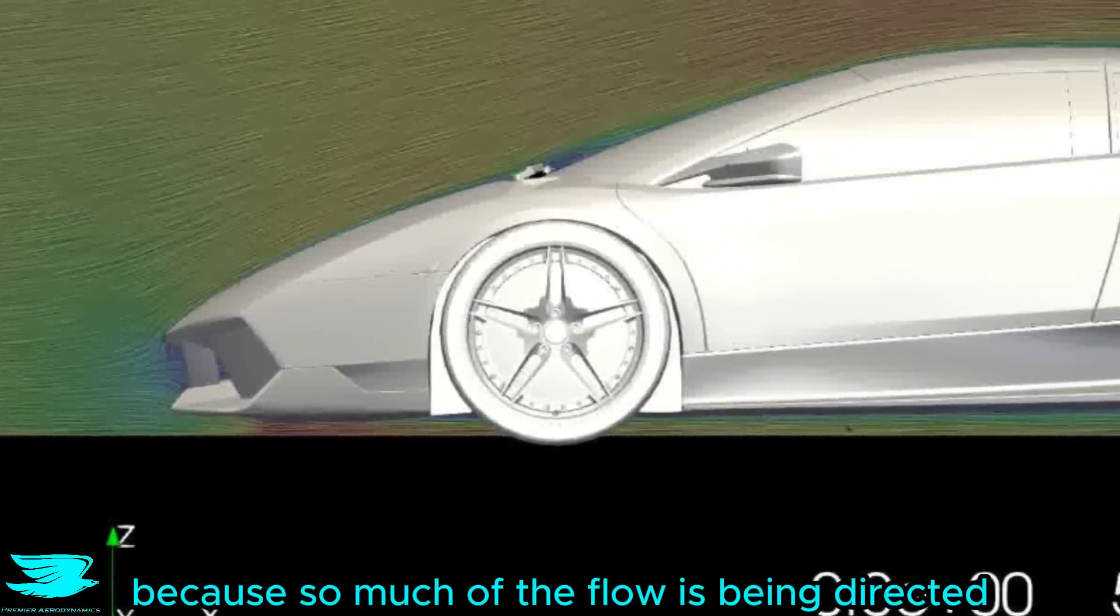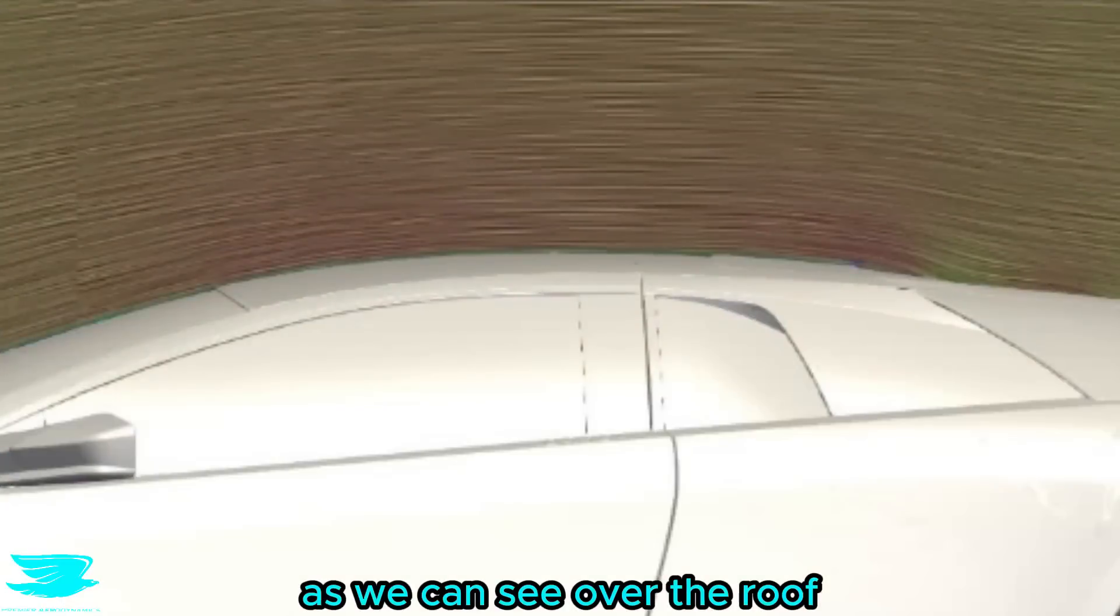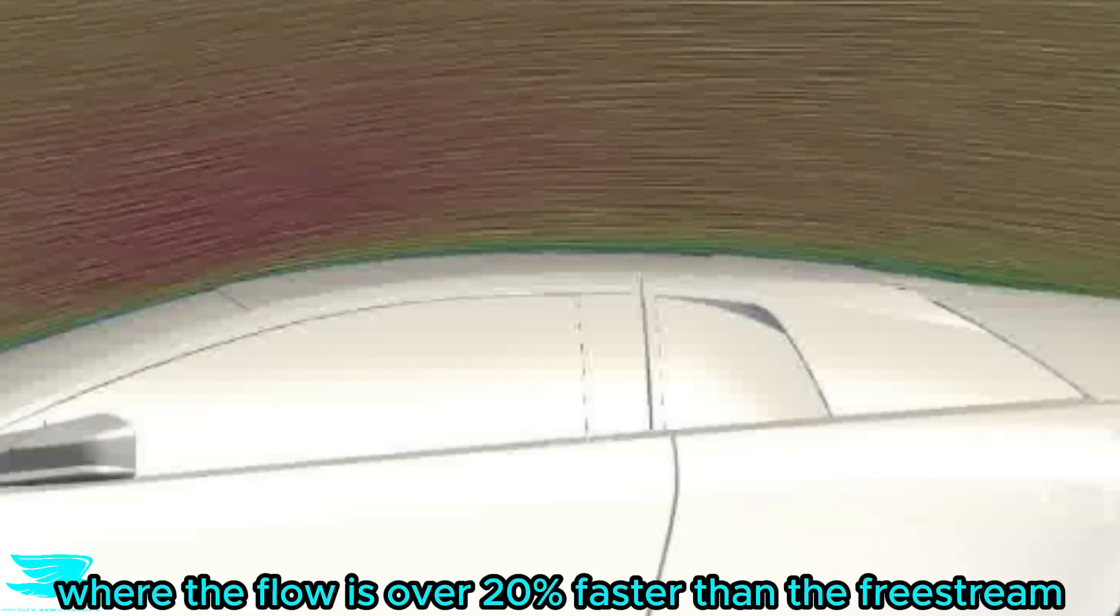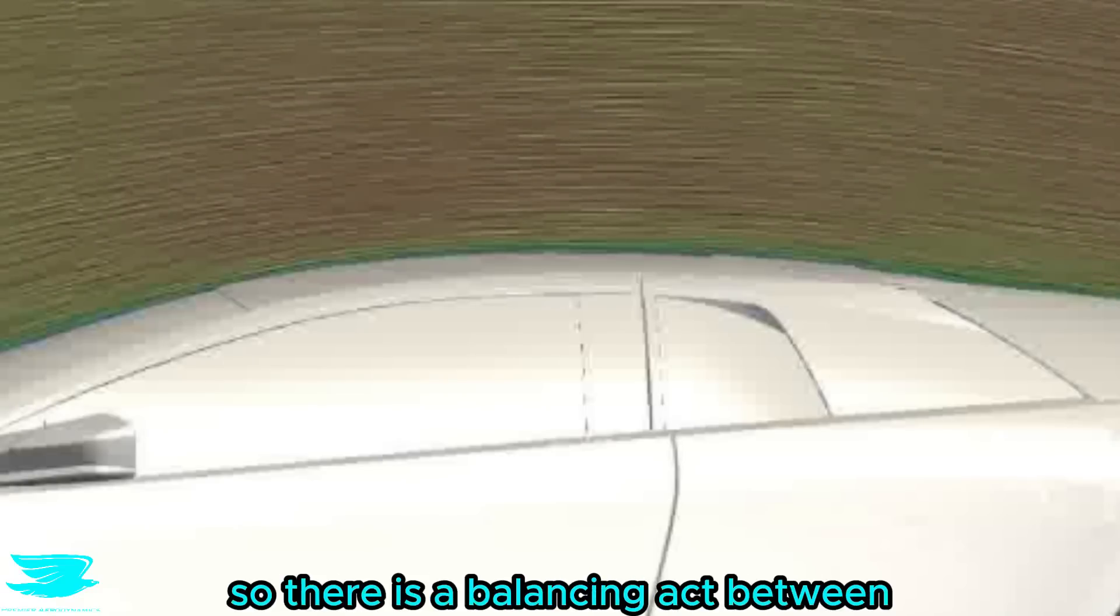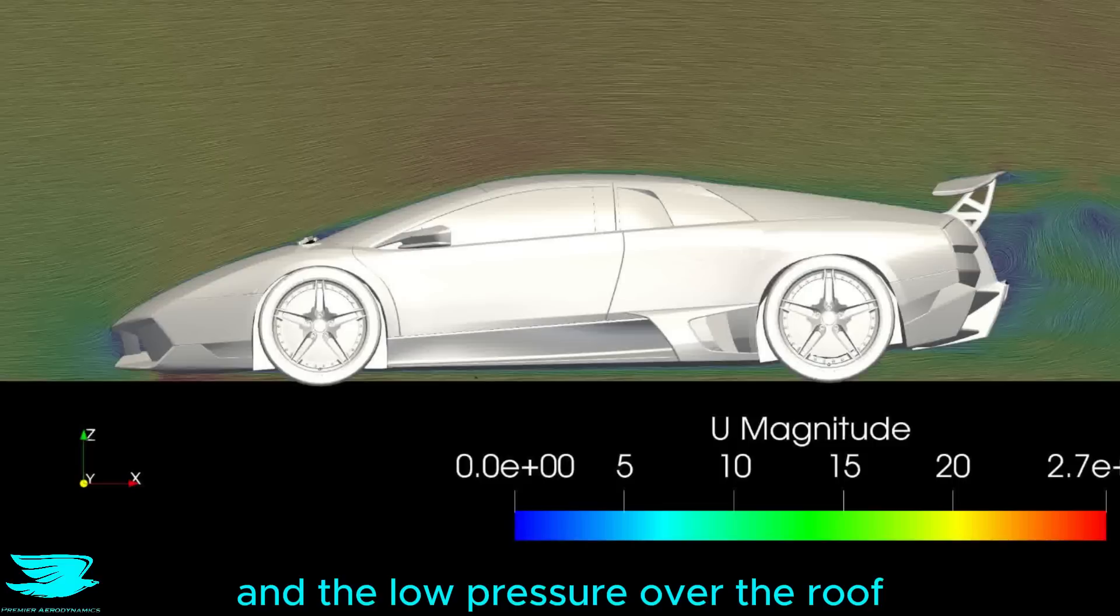On the other hand, because so much of the flow is being directed over the car, it speeds up a lot, as we can see over the roof, where the flow is over 20% faster than the freestream velocity. That comes with lower pressure, and hence higher lift. So there is a balancing act between the low pressure over the underbody and the low pressure over the roof.